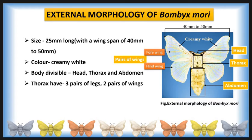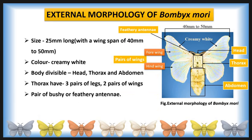Each thoracic segment has a pair of legs, called the prothoracic leg, mesothoracic leg, and metathoracic leg respectively.